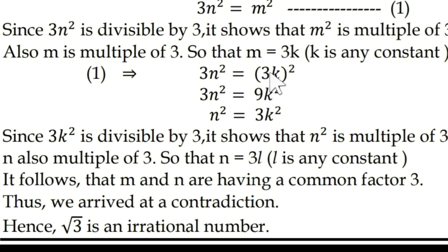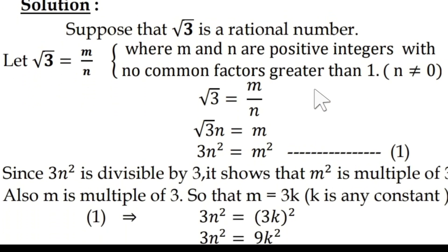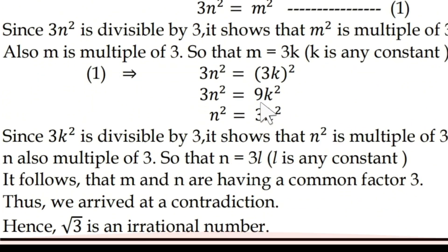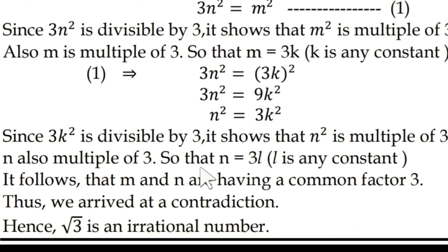So it follows that m and n have a common factor of 3: m is a multiple of 3 and n is a multiple of 3. So both m and n have common factor 3, which is a contradiction to our assumption that m and n are positive integers with no common factors greater than 1. So our assumption that root 3 is a rational number is wrong. Therefore root 3 is an irrational number.